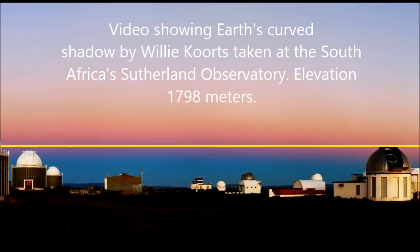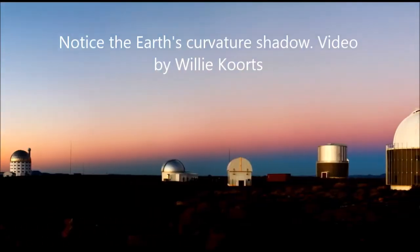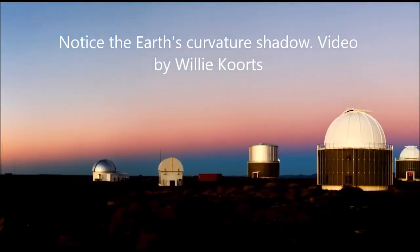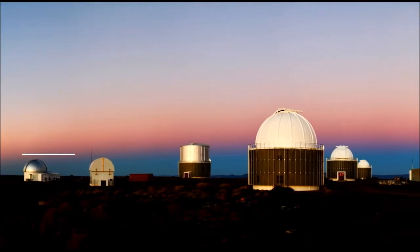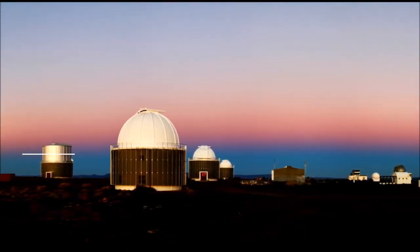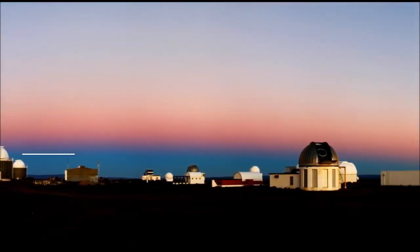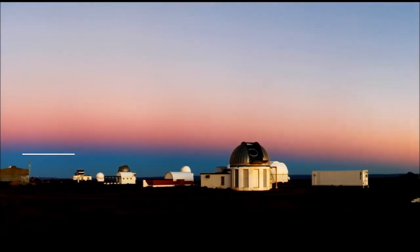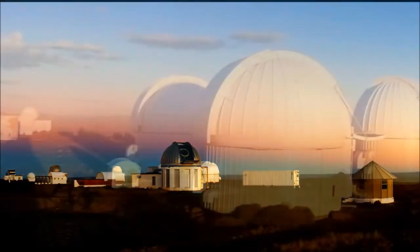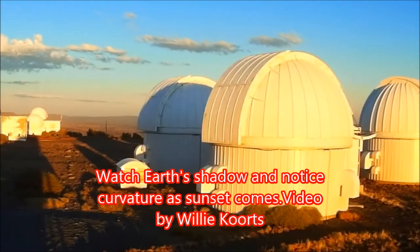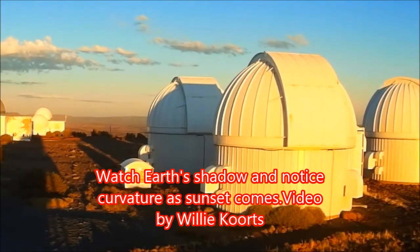Video shown: Earth's curved shadow by Willy Quartz, taken at South Africa's Southern Observatory at an elevation of 1,798 meters. Featured behind the domes of the South African Astronomical Observatory in Sutherland is the bluish, wedge-shaped shadow of the Earth, bounded above by the pinkish anti-twilight arc known as the belt of Venus.